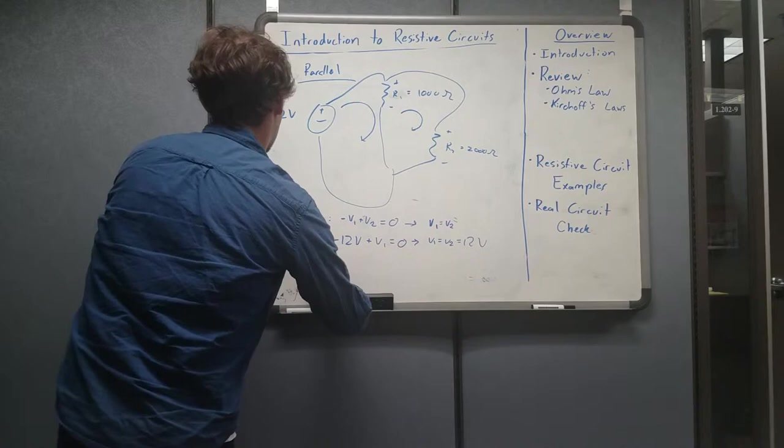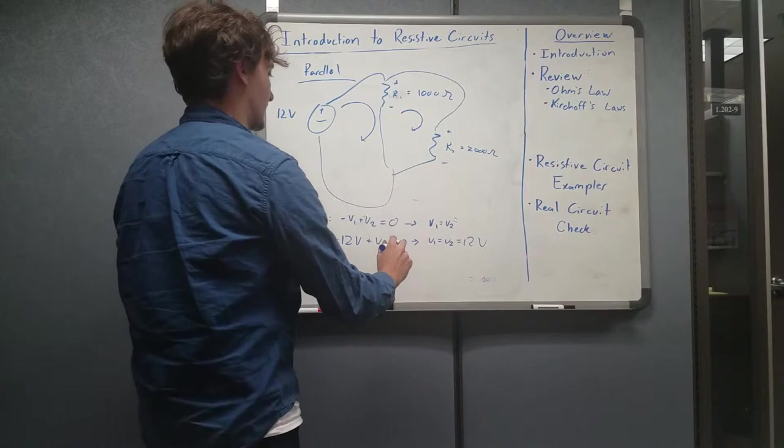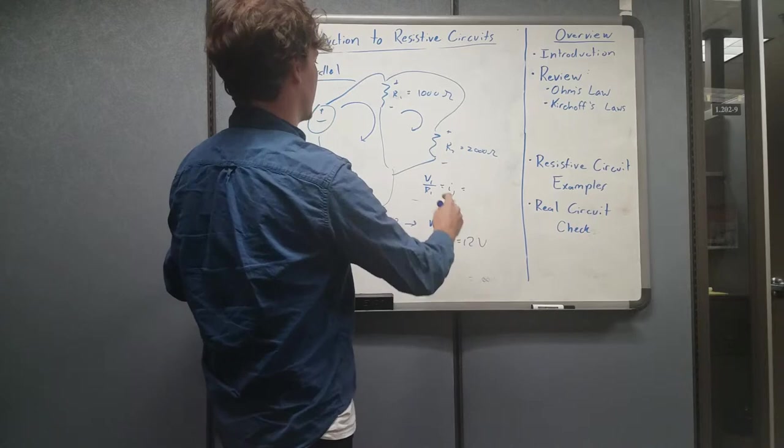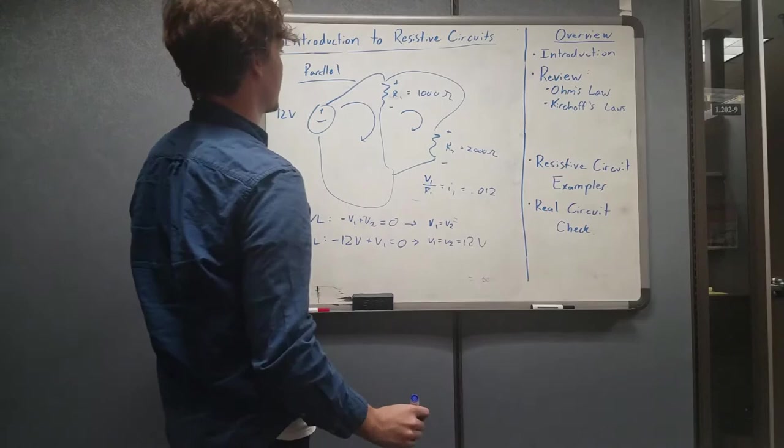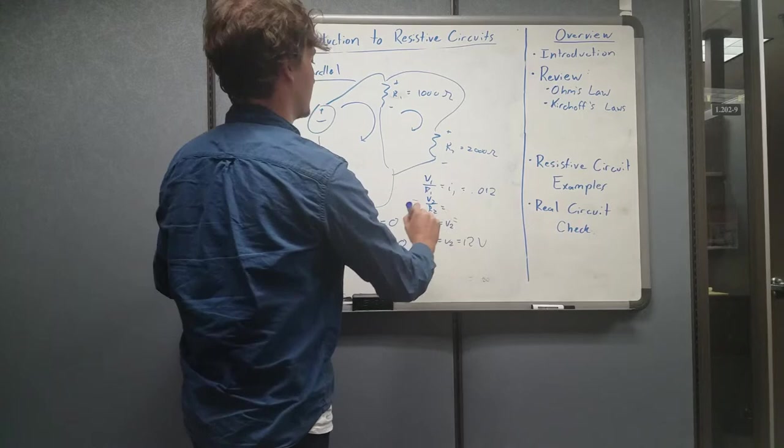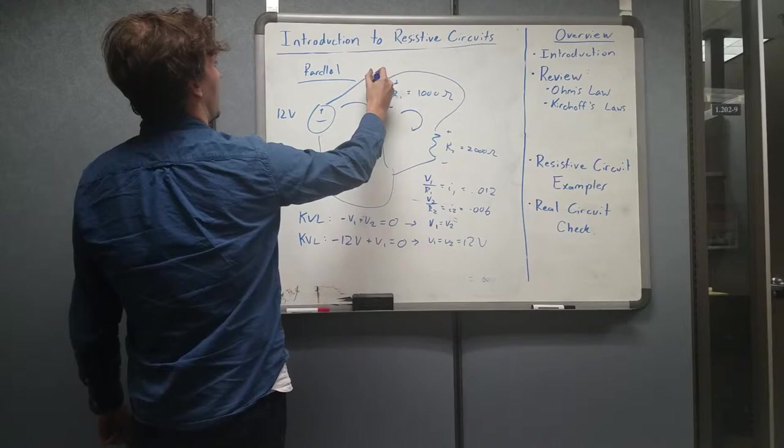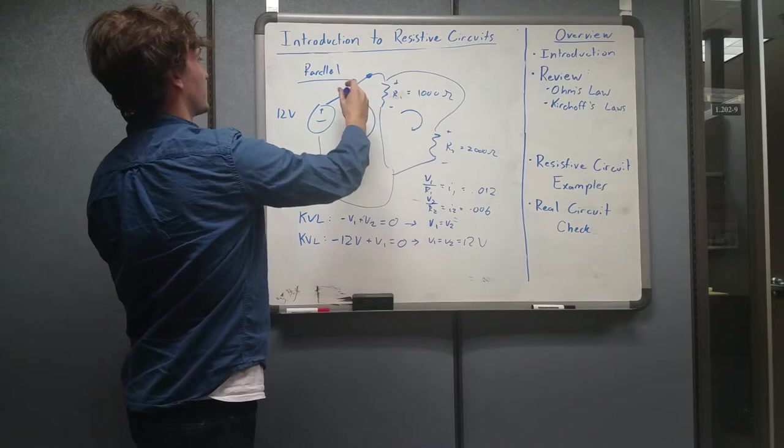And if we wanted to solve for individual currents, then we could actually do, we know directly what both the current through these are because of Ohm's law. So if I have V1 over R1, I get I1. And I believe that comes out to be 0.012, if I'm not mistaken. And if I get V2 over R2, which is the same, 12 volts divided by 2000, I get 0.006, and then my final KCL, Kirchhoff's current law, through a node here,